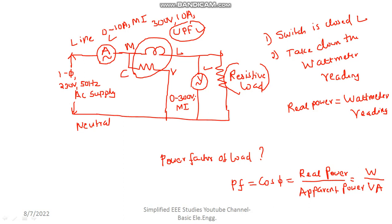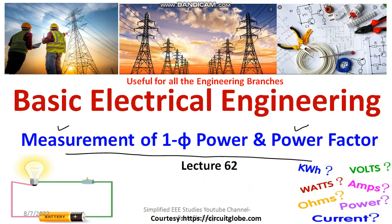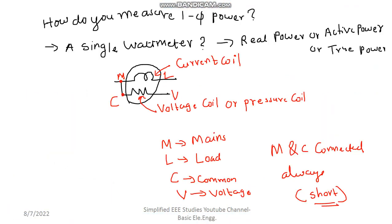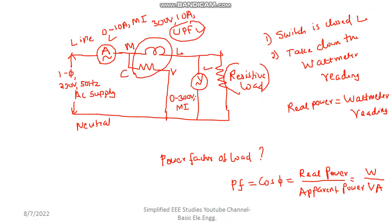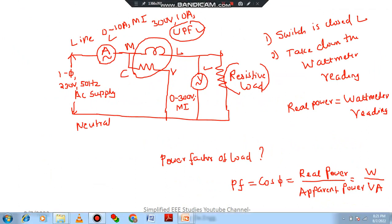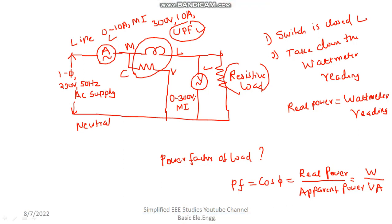In this session, I discussed how to measure single phase power using a wattmeter. I also shown what is a wattmeter — what is the current coil and pressure coil, and the significance of the wattmeter. Afterwards, I drew the circuit diagram, and from it, if you provide the supply, you get the wattmeter reading which gives the real or true power. The power factor is calculated as the ratio of the wattmeter reading divided by the ammeter and voltmeter product.